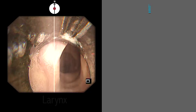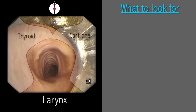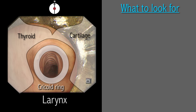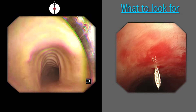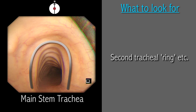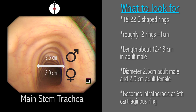Once the vocal cords are passed, we enter the larynx. This airbox is kept open at all times by a number of cartilages and membranes. We will only see the mucosal covering of these structures from the inside, but landmarks of the thyroid and cricoid cartilages are noted. The cricoid cartilage is the only complete ring, and the cricothyroid membrane is the landmark for introducing a mini-trach or injecting local anesthetic. The true trachea starts distal to the cricoid cartilage. The C-shaped tracheal rings are noted to dent the mucosa — in adults there are 18 to 22 rings, roughly two rings per centimeter. The trachea is 12–18 cm long in the adult male and shorter in the female. The adult male trachea has a diameter of 2.5 cm and the female 2 cm — a useful guide when considering tracheal stent size.